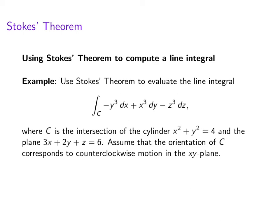So our example is to use Stokes Theorem to evaluate the line integral of negative y cubed dx plus x cubed dy minus z cubed dz. And here C is going to be the intersection of the cylinder x squared plus y squared equals 4 and the plane 3x plus 2y plus z equals 6.